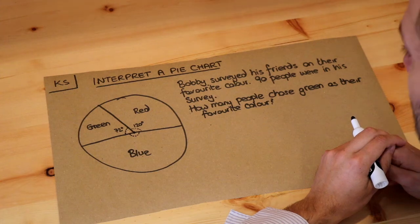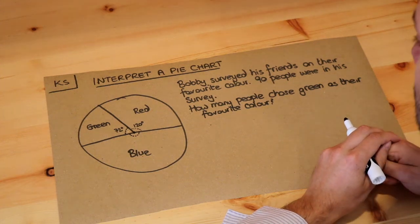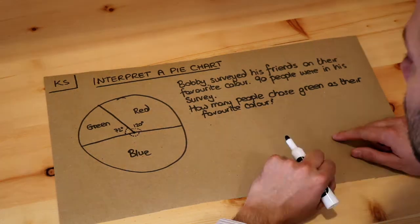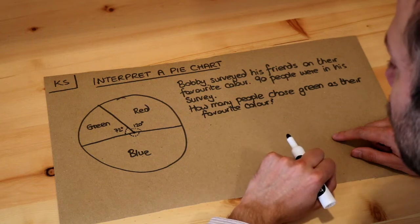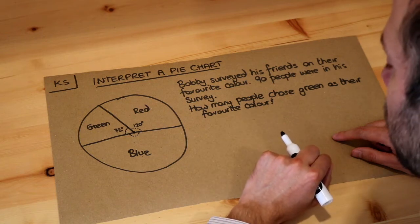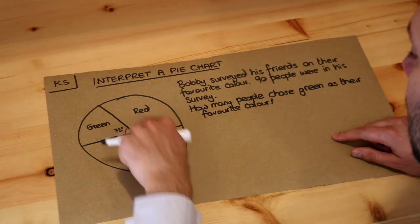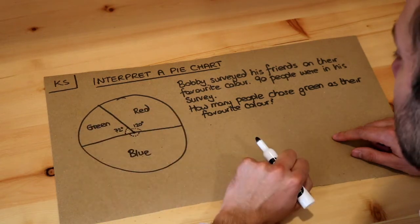Hello and welcome to this Dr. Ross-Math's key skill video on interpreting a pie chart. What a pie chart is really good at is showing the proportion of times each thing occurred.